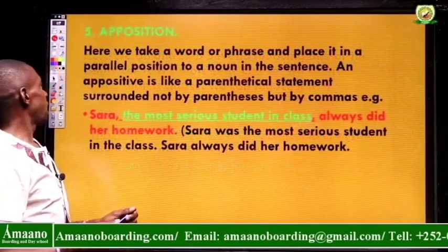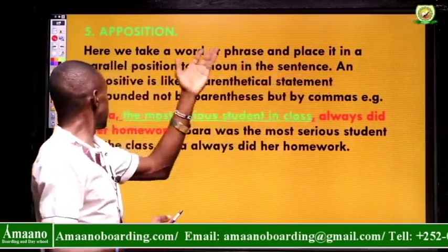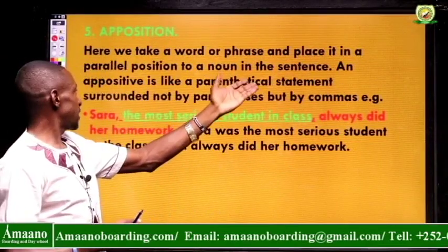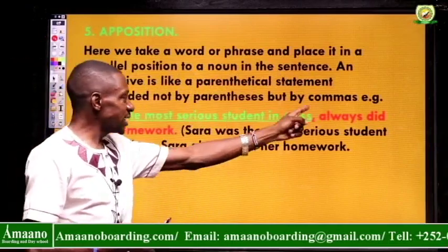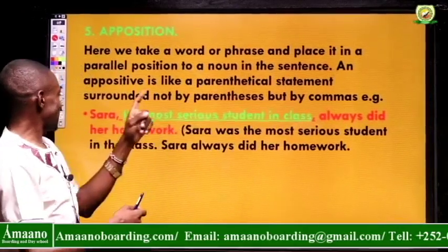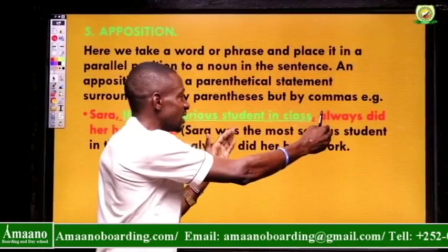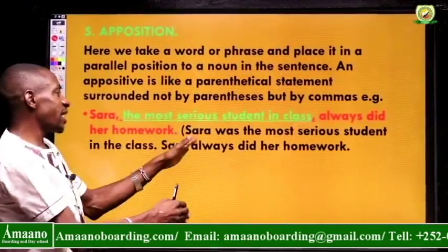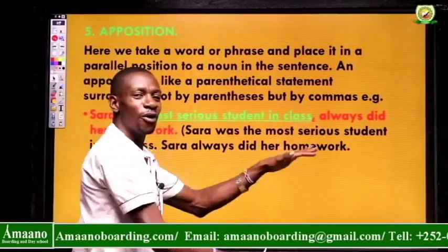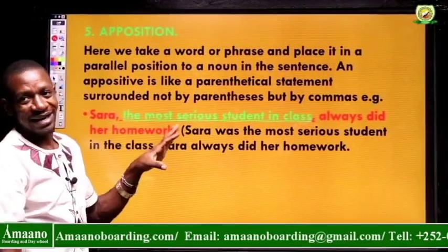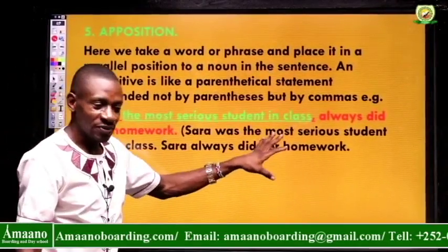Instead of writing all those words, we have reduced it to 'the boy scared by the movie began to cry.' Then we have apposition: we take a word or phrase and place it in a parallel position to a noun in the sentence. An appositive is like a parenthetical statement surrounded not by parentheses but by commas — for example, 'Sarah, the most serious student in class, always did her homework.' Sarah was the most serious student in the class; Sarah always did her work. We combine those sentences into that one structure.